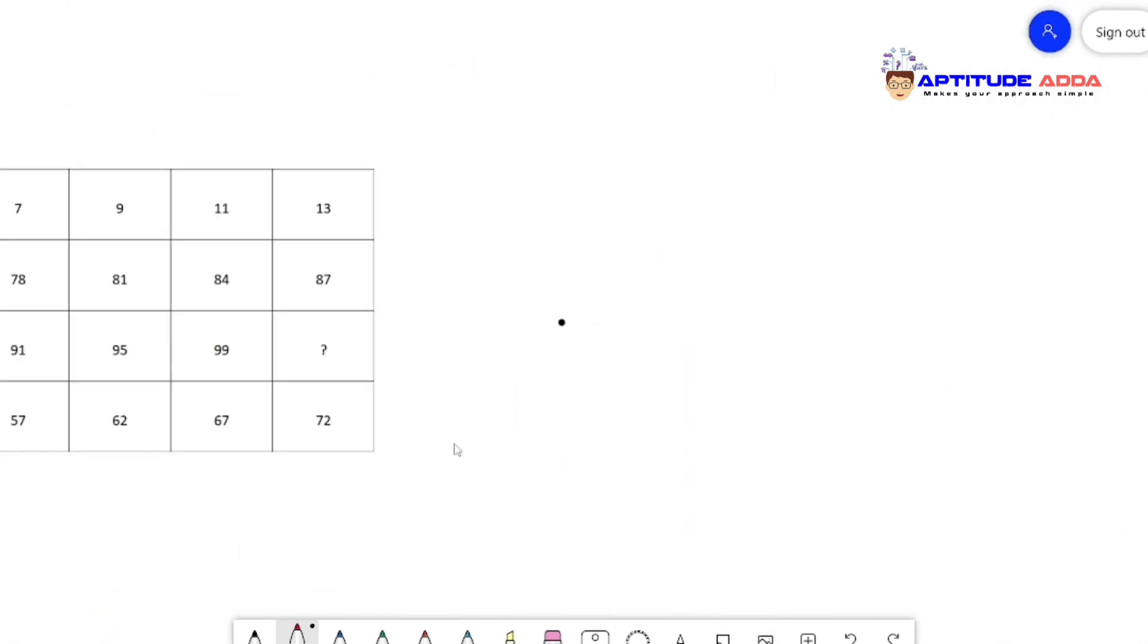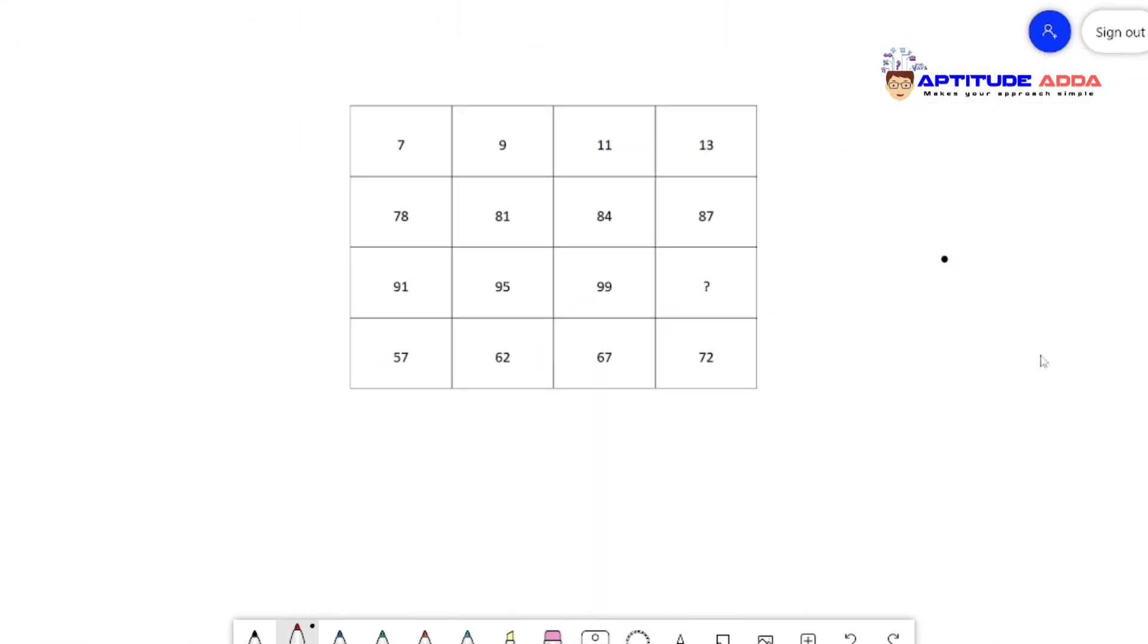Let's see the next problem. It's a 4 by 4 grid, so it's a three marks question. You may feel it's difficult, but it's very simple. Just look at the numbers: 7, 9, 11, 13. Seven plus 2 is 9, plus 2 is 11, plus 2 is 13. Similarly, 78 plus 3 is 81, plus 3 is 84, plus 3 is 87. And look at the last row: 57 plus 5 is 62, plus 5 is 67, plus 5 is 72. They have particular series.